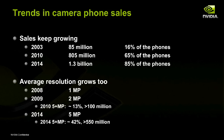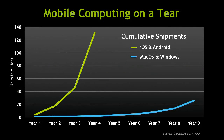Just one more slide to show the growth of this market. The bottom line shows how desktop system volumes grew in their early years. These aren't the same years — they just compare the growth curves of these types of devices over the first ten years. The rate of growth of smartphones is obviously several times the rate of growth that PCs achieved when they were first introduced in the 90s. So it is an exciting area.